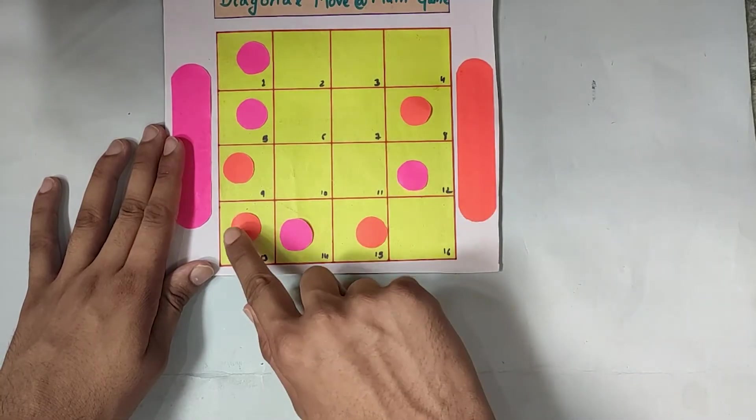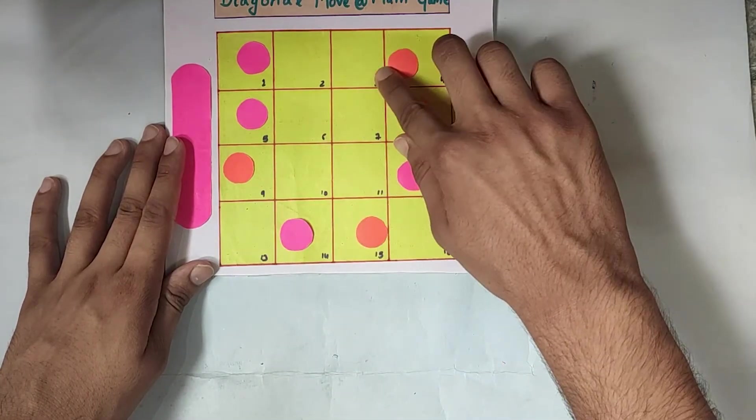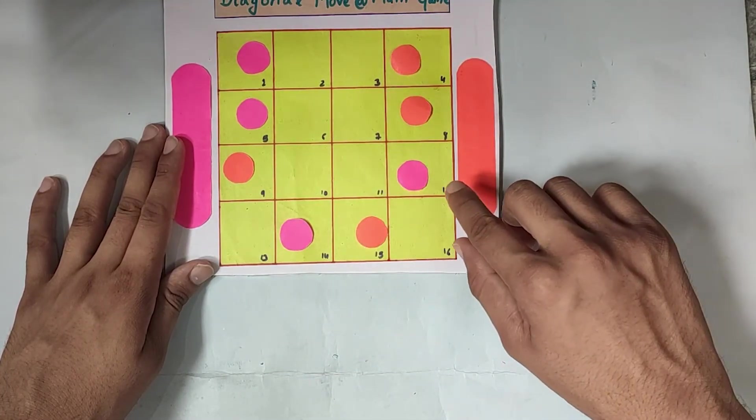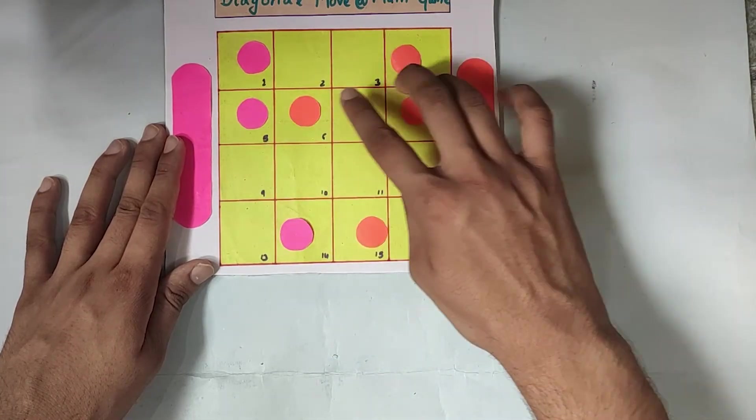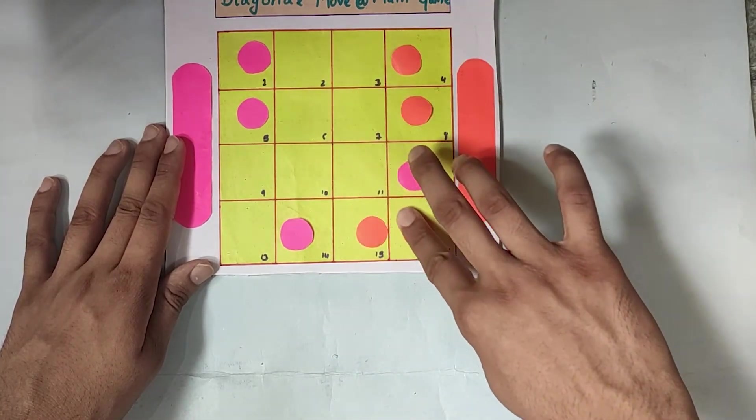Seven. Eight steps. Now, what we will do? Move it to here. Nine steps. And ten steps.